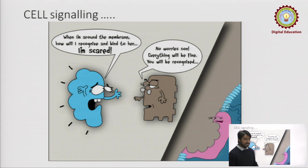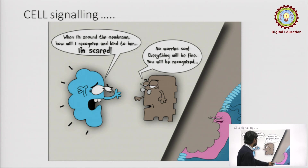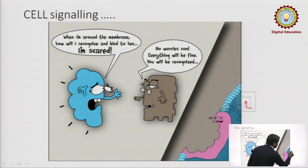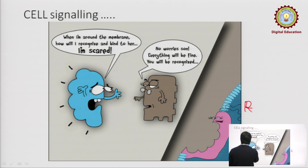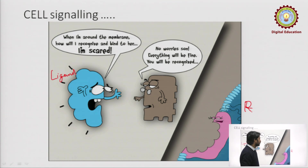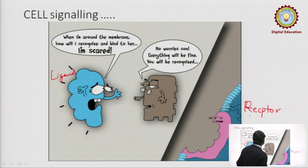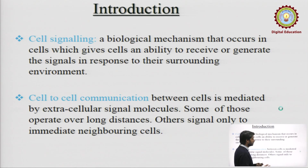Here is a cartoon depicting the cell signaling process. This is the receptor present on the cell membrane. This is the ligand, which is also called a signal molecule, and this is the receptor which will bind to the ligand. So we will learn in detail how the cell will communicate.